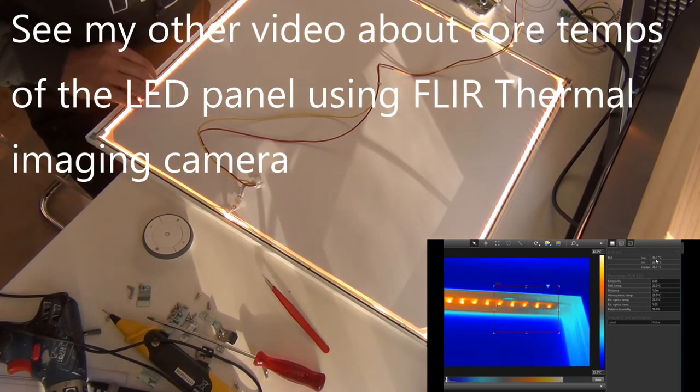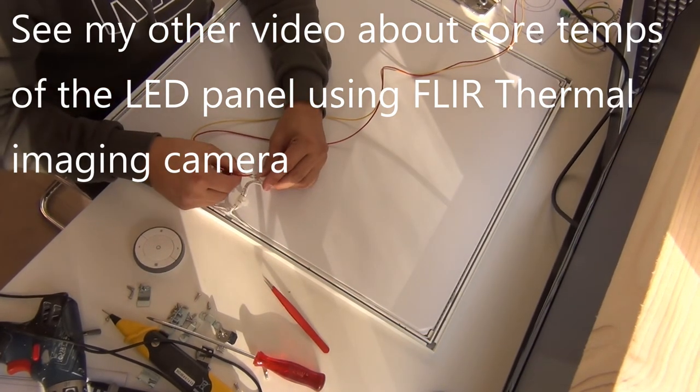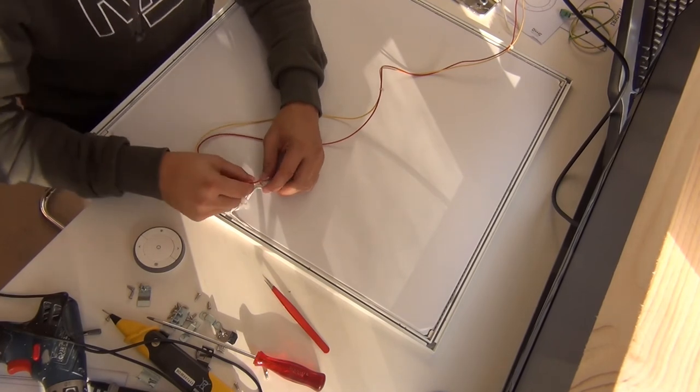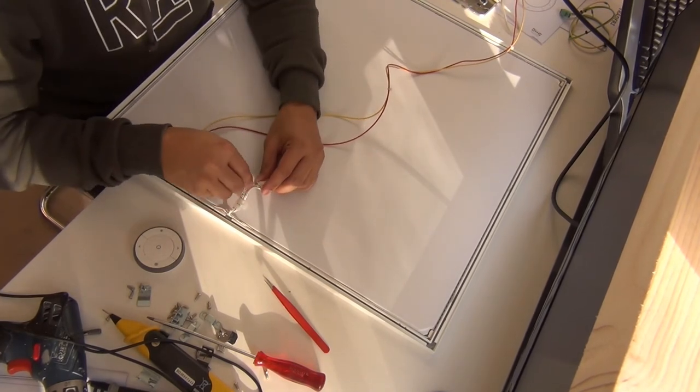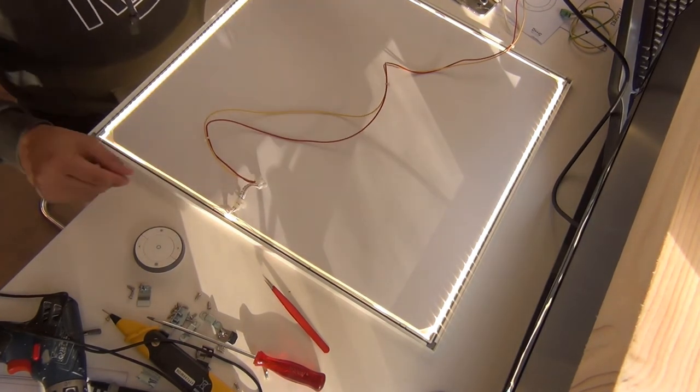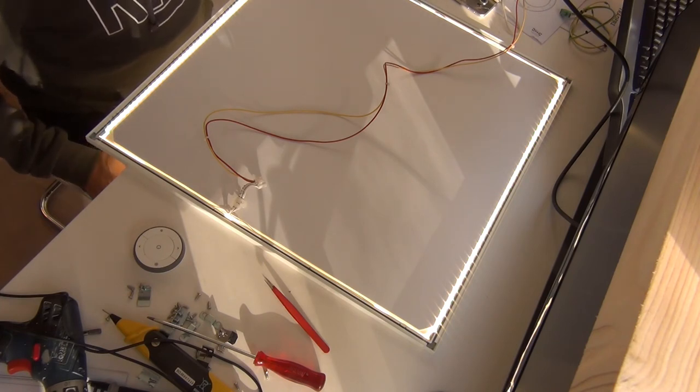Now I'm going to switch over to the warm white. Let's see if there's any change. 29 volts at 1.18 amps, almost the same. And the milliamps are increasing.